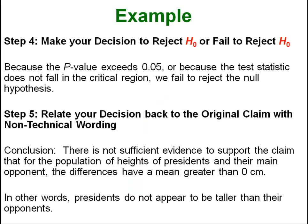Step 4, our decision is to fail to reject. Step 5 is we relate it back to the claim, and our conclusion is there is not sufficient evidence to support the claim that the heights of presidents are bigger than their opponents.